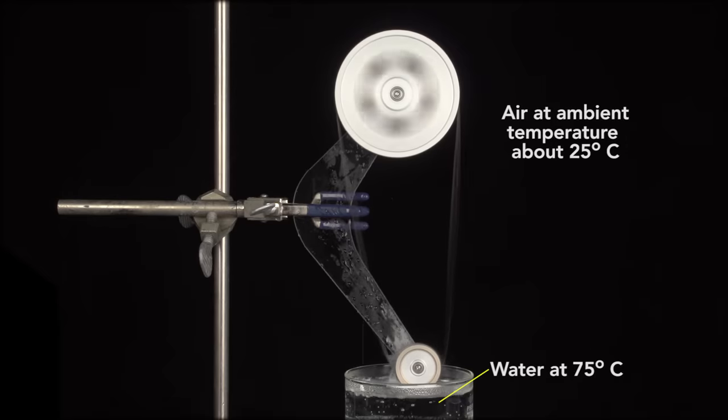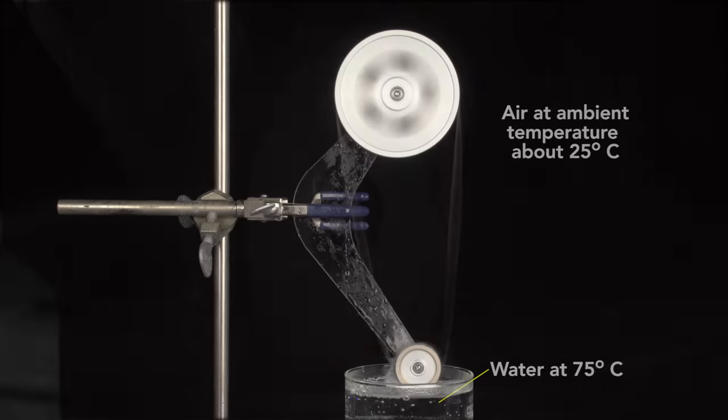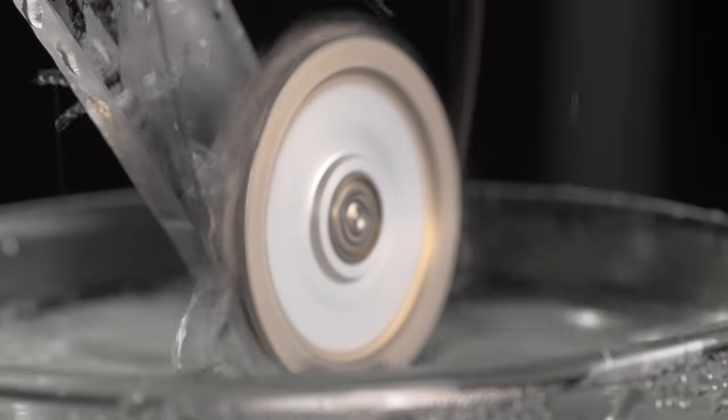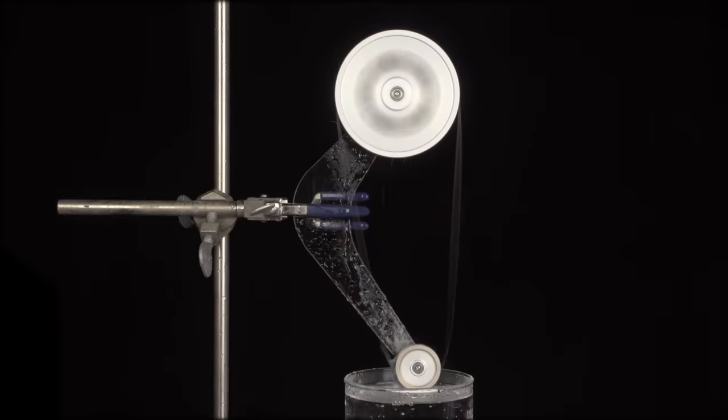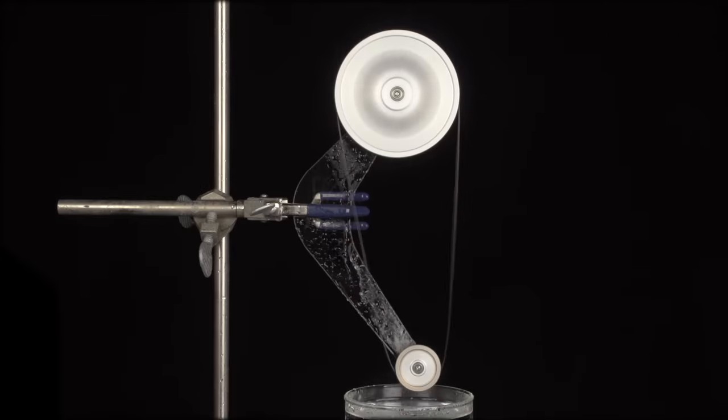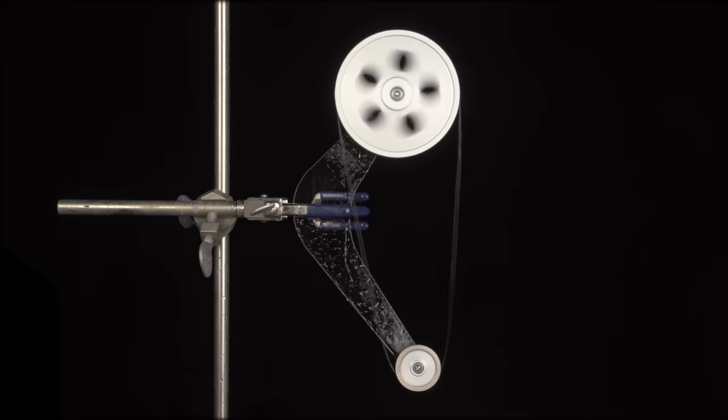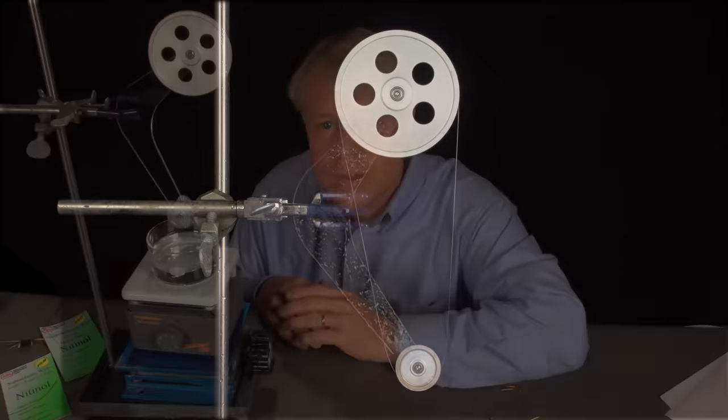It uses the temperature difference between the water and the air to power the engine. When I remove the water, the wheel stops spinning. This engine runs because this loop of nitinol wire was originally straight at a very high temperature, so as it's heated, it tries to straighten.